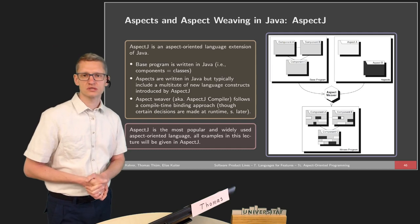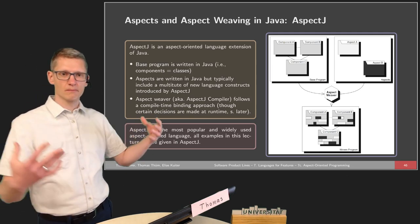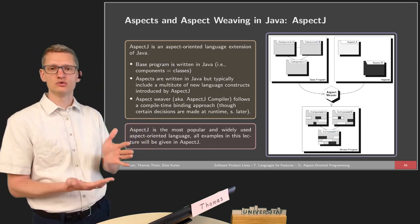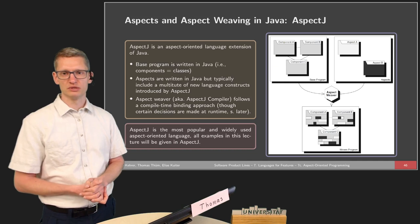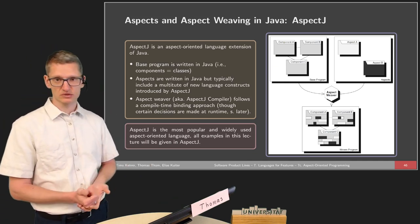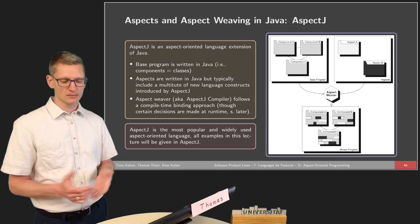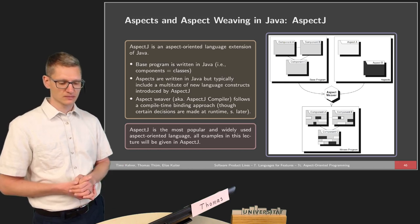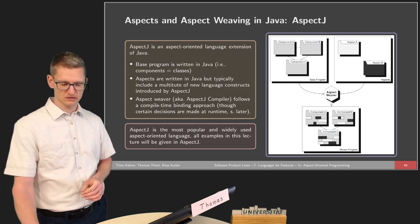Still certain decisions are made at runtime. The aspect weaver will combine aspects into the code, but there are positions where statically it cannot be decided whether the new code should be executed, so runtime variability will be generated. AspectJ is the most popular and widely used aspect-oriented language, and all examples in this lecture will be given in AspectJ. This goes hand in hand with the best tool support available, at least until development of tool support was stopped for Eclipse.